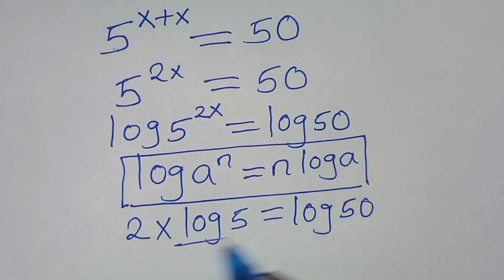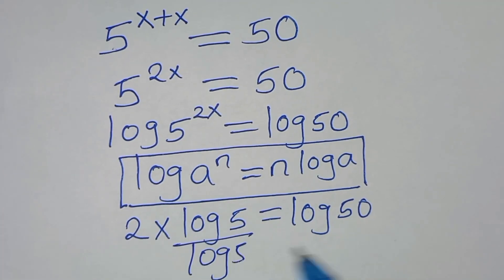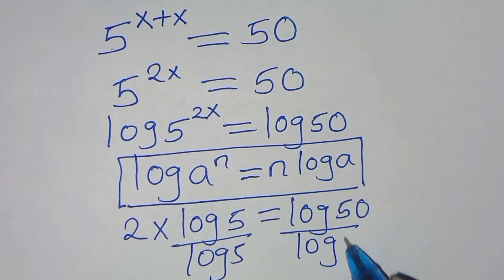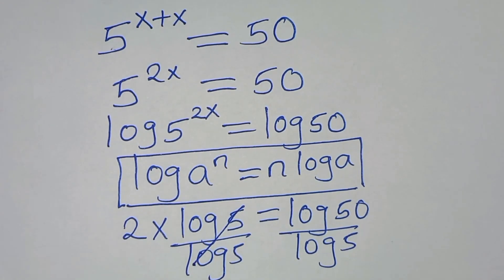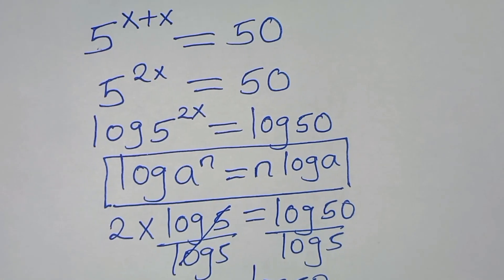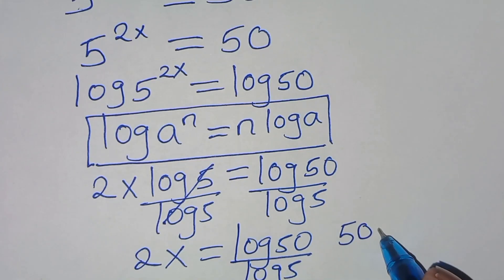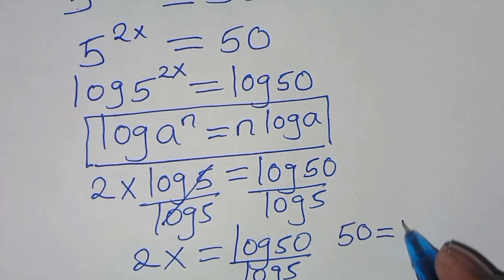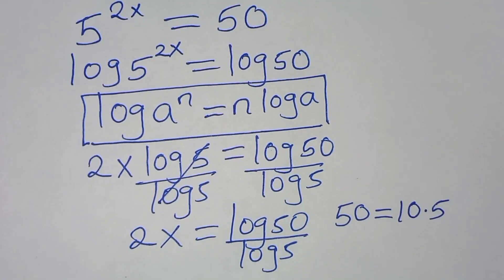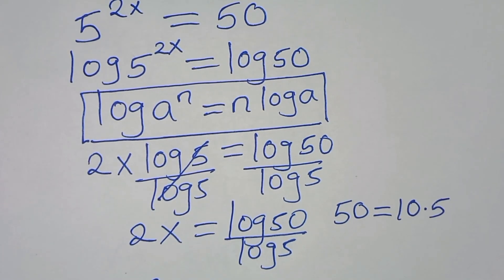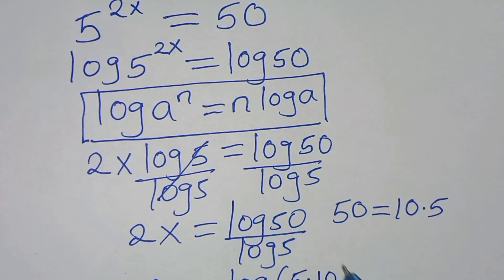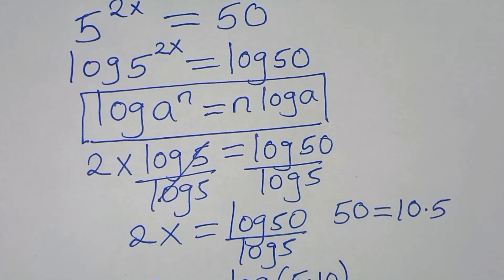The next step is to divide both sides by log 5. Log 5 and log 5 simplify, so that we have 2x is equal to log 50 divided by log 5. We can express 50 as 10 times 5, so here we have 2x equals log(5 times 10) divided by log 5.